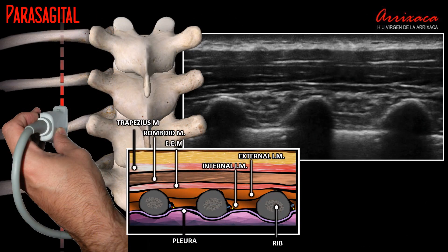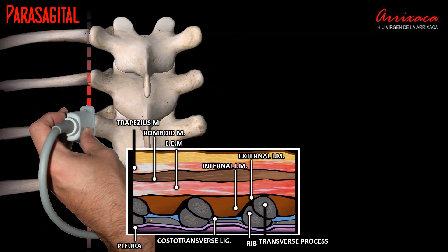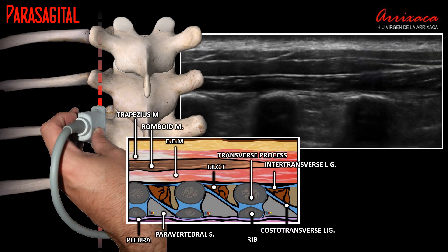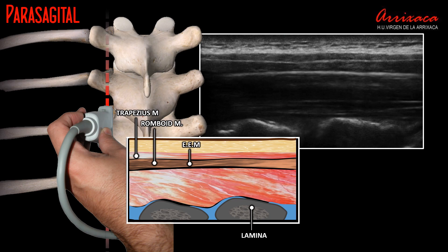In an adult patient, placing our transducer on the costal plane, we will observe consecutive rounded images with posterior acoustic shadowing and a sliding hyperechoic line corresponding to the pleura. As we move medially, the rounded images will transform into irregular images shaped like camel humps, corresponding to the costotransverse joints. Our target is found where rectangular images with posterior acoustic shadowing appear and the pleura hides in deeper planes. The distinct sawtooth or tile-like image indicates we are over the lamina.